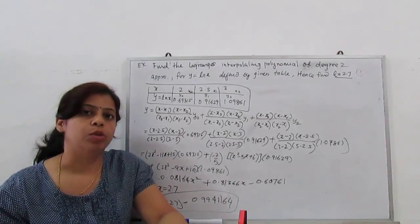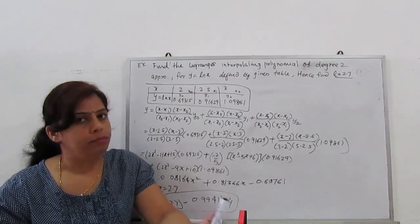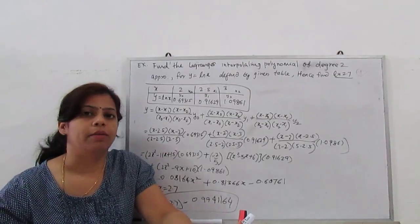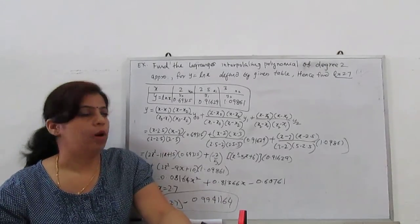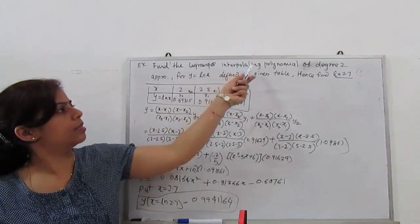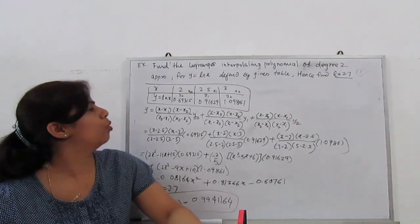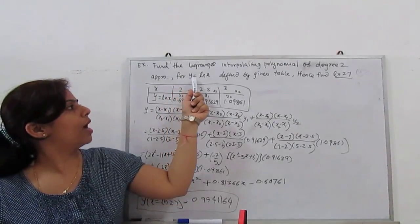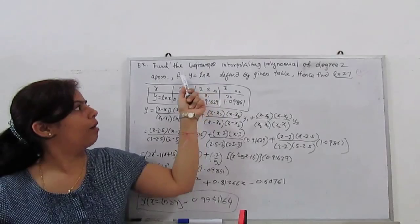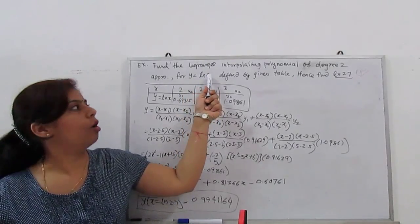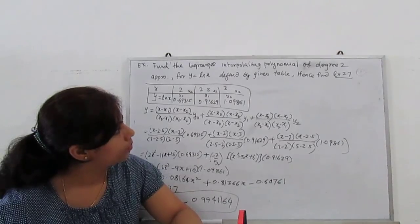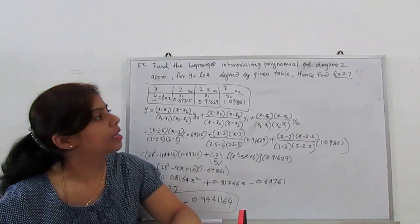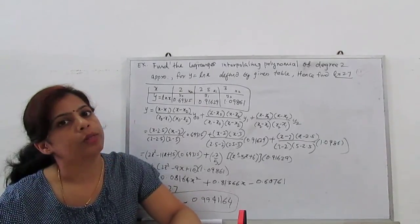This is how to apply and construct Lagrange's formula. Here we deduce the polynomial. Similar to previous example but maybe more helpful for you. Find Lagrange's interpolating polynomial of degree 2.